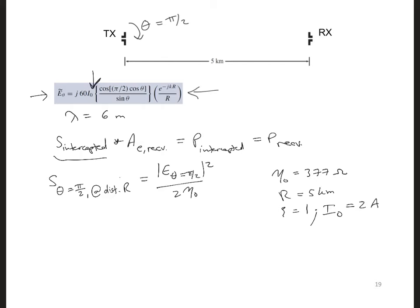Putting all this together, the amplitude of the electric field at the receiver, E theta at pi over 2 is 60 times I naught, which is 2, over r, which is 5,000.